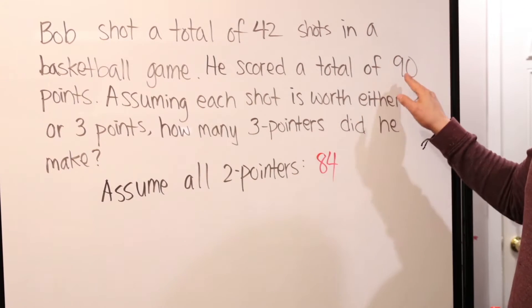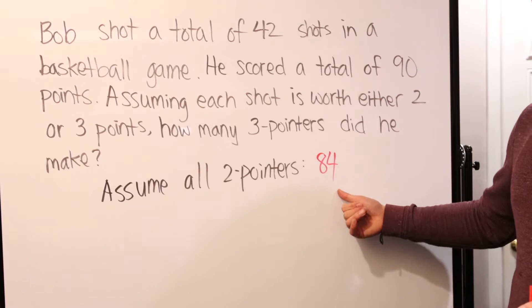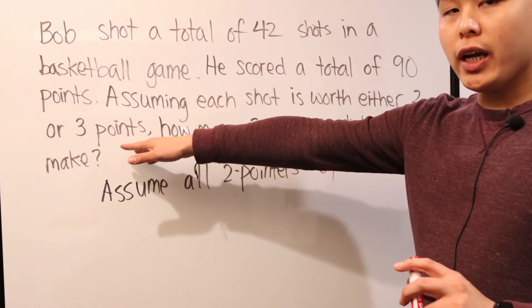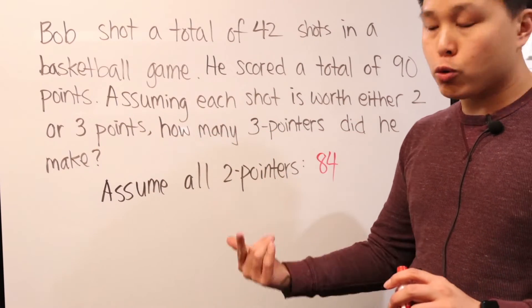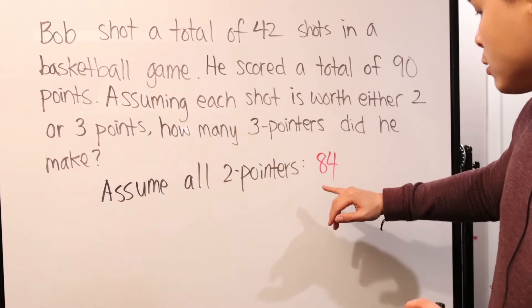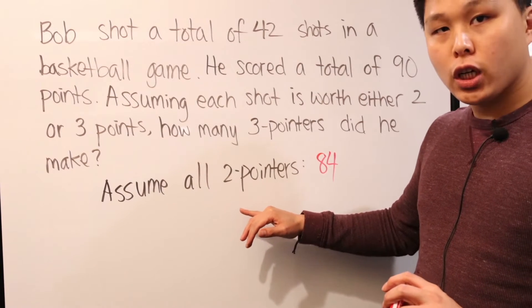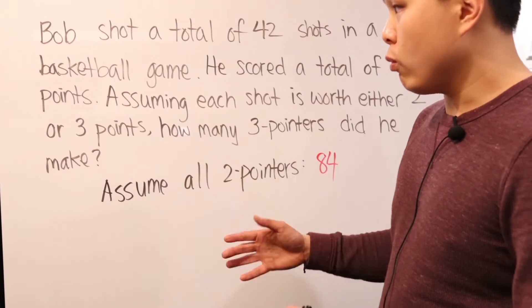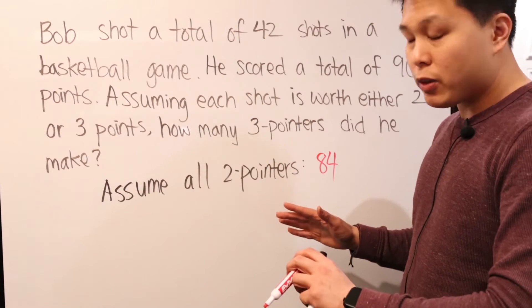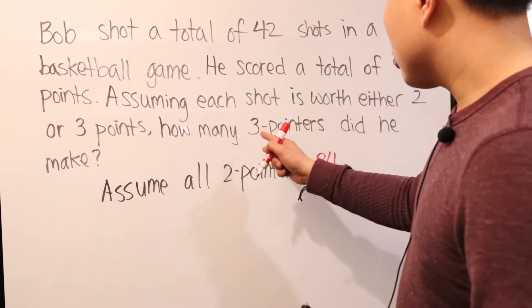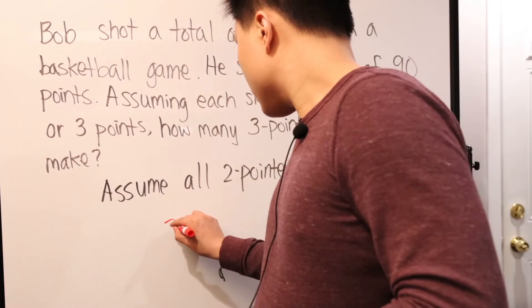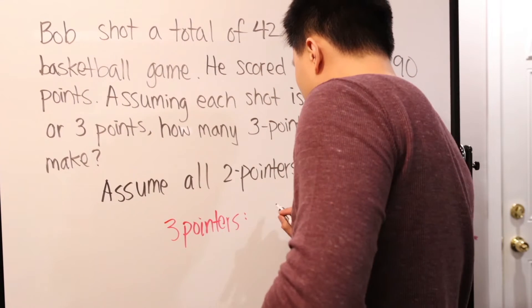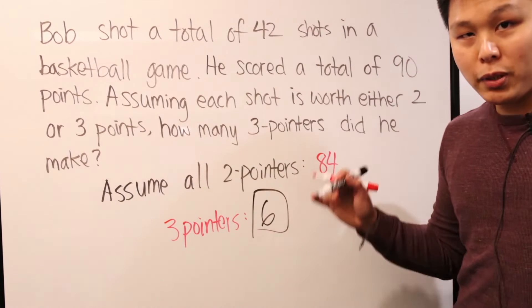Assume they're all two-pointers. Well, if that's the case, that means 42 times two is just 84. That's not good because guess what? We want a total of 90. How many are we missing? We're missing six points for this to be 90. Well, guess what? If we change some of them to three points, every time we change a two-pointer to three-point, we're adding another point. Well, if this is missing six points, that means we just need to change six of these two-pointers to three-pointers, and that will give us a total of 90. So just like that alone, without having to go through any of the system of equations and solving it that way, we know that the total amount of three-pointers he made is six, which saves us plenty of time.